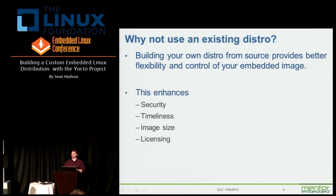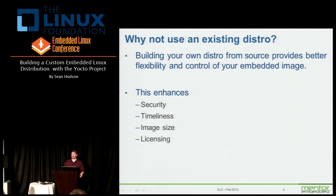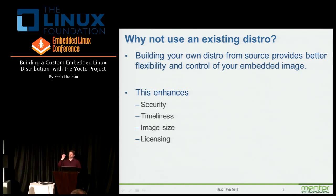Building from source is really going to help you enhance the security of your product at all those tiers. It's going to help you increase the timeliness of your product — when you have a specific issue or need to address a specific feature, you can do it right there. It allows you to greatly customize your image size, though this has become less important over time as footprints have grown. Licensing is also continuing to be a big focus and a big problem for companies. There's an allergy for a lot of corporations to absorb GPLv3 into their code base, so tools that help make sure that doesn't happen are very useful. The Yocto Project incorporates those, and you can guarantee that it's correct by looking at the source.